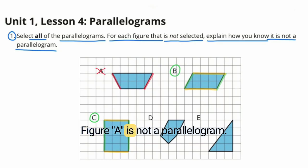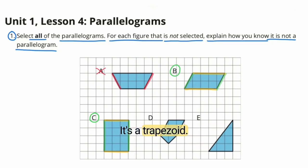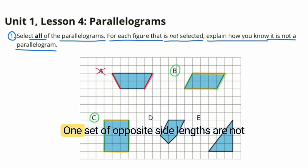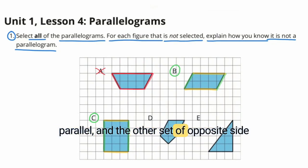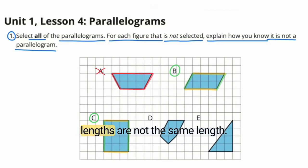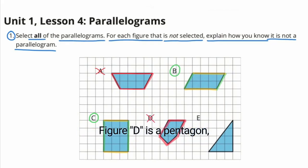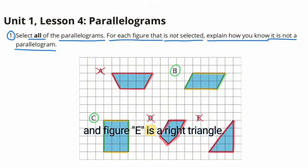Figure A is not a parallelogram — it's a trapezoid. One set of opposite sides are not parallel, and the other set of opposite side lengths are not the same length. Figure D is a pentagon, and Figure E is a right triangle.